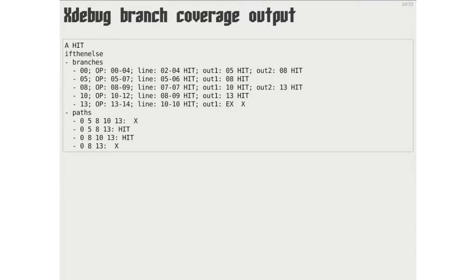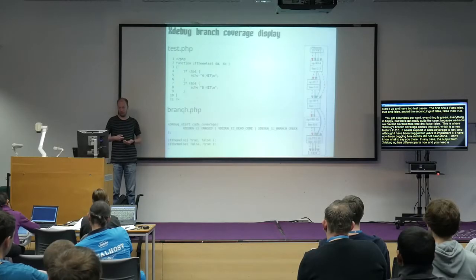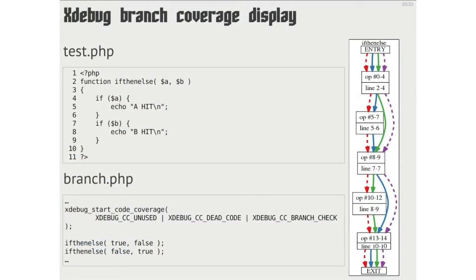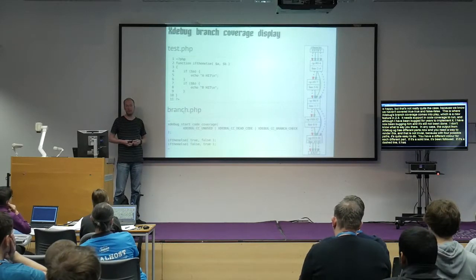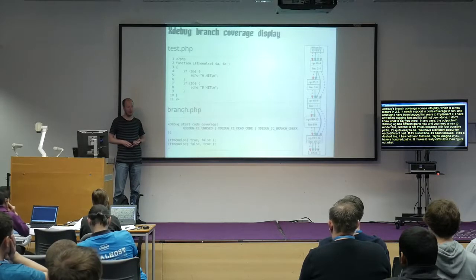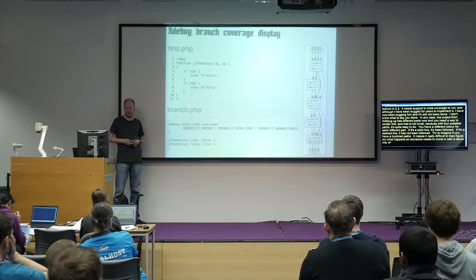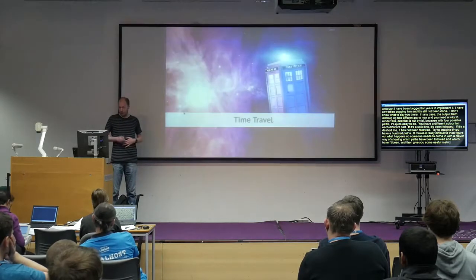Xdebug now outputs those different branches and paths because it collects that information. You need a way to render this, which is not trivial. With four possible paths you can use different colors — solid lines for followed paths, dashed lines for unfollowed. But with 100 paths it becomes really difficult to figure out what actually happened. Someone needs to come up with a clever way of showing which paths have been followed and give useful metrics.